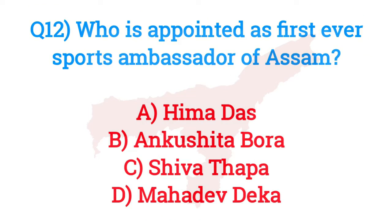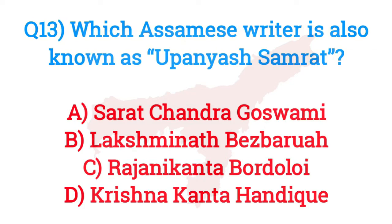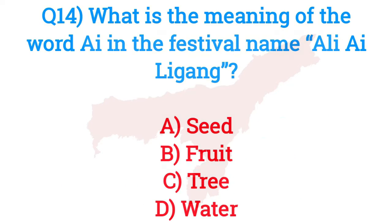Question number twelve: Who is appointed as the first ever sports ambassador of Assam? The answer is option A — Hima Das. Question number thirteen: Which Assamese writer is also known as Upanyas Samrat? The answer is option C — Rajanikanta Bordoloi.